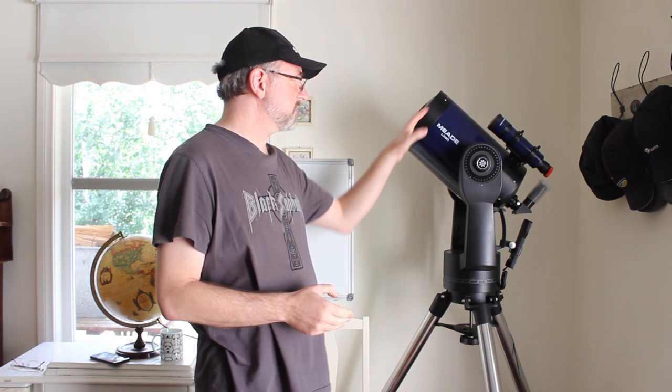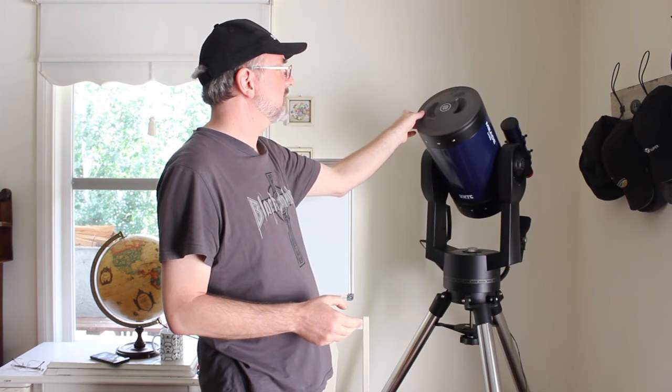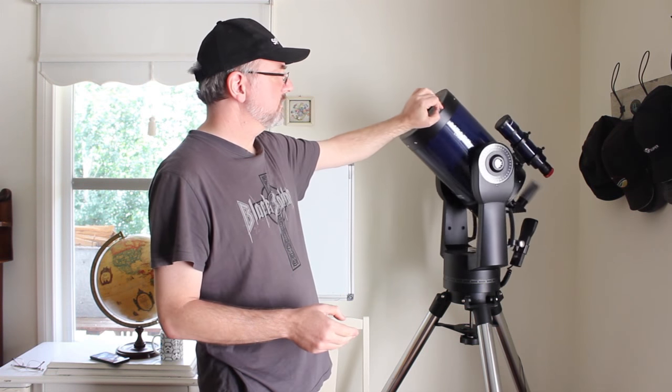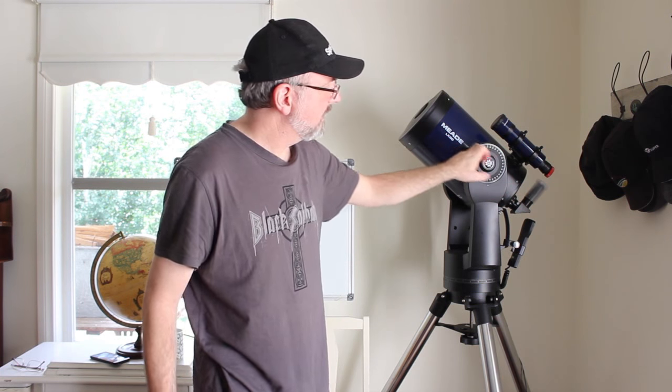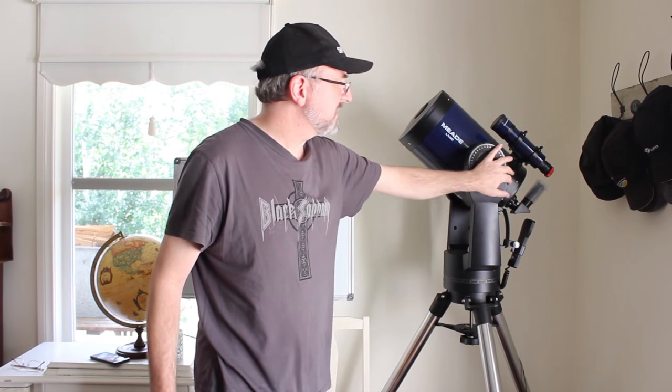It's a Meade LX90, probably the best one I own. It's a 10 inch, which means it's got a 10 inch dome from here to here. It uses a mirror at the base here to reflect light to another mirror up here and then back into the eyepiece, which is at the end there.